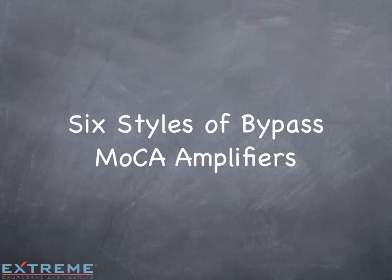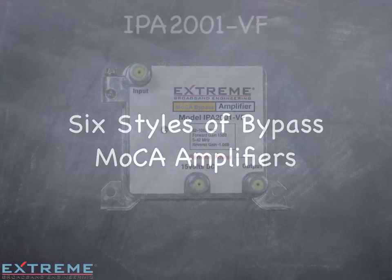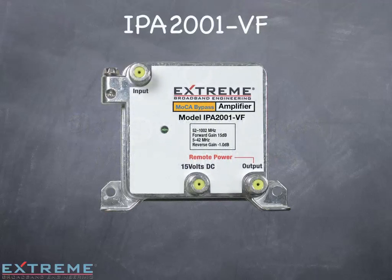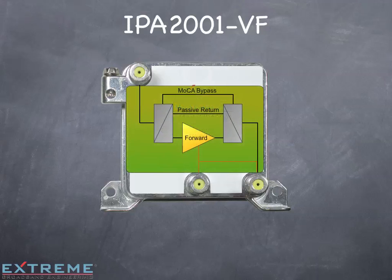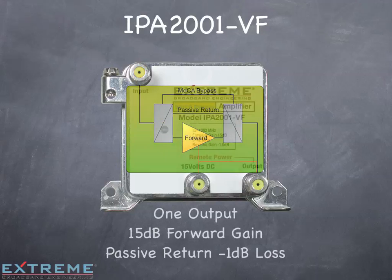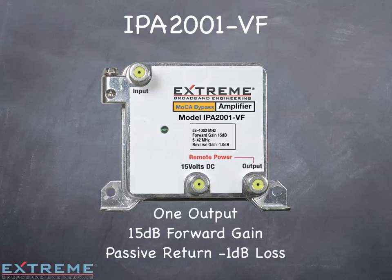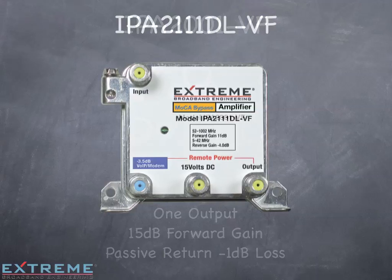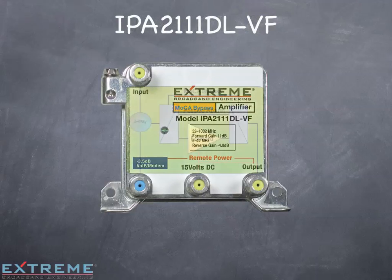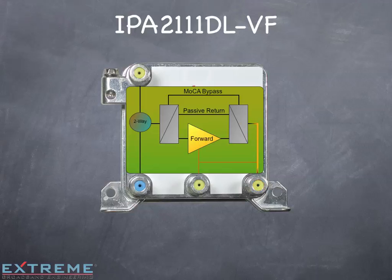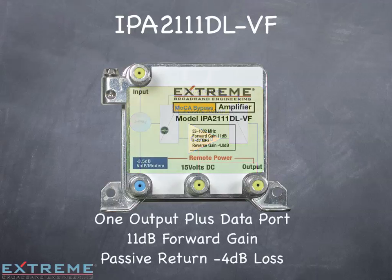Let's look at the six styles of bypass MOCA amplifiers. The first is a one output amplifier that will allow the MOCA signal to flow between the input and output ports. It has 15 dB of gain and passive return with 1 dB of loss. The second is a one output amplifier with a data plus port that will allow the MOCA signal to flow between all ports. It has 11 dB of gain and passive return with 4 dB of loss.